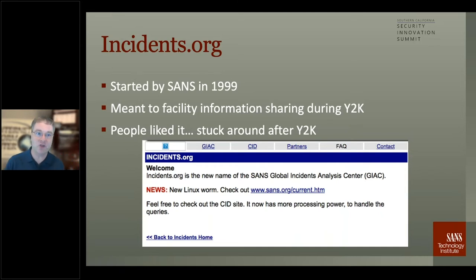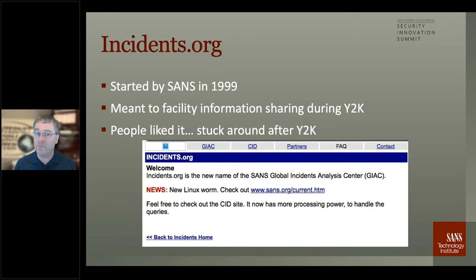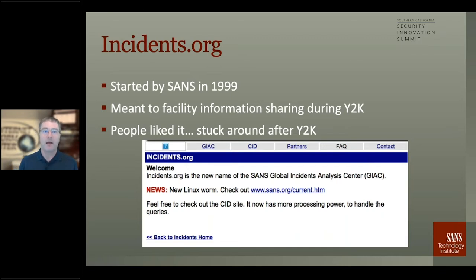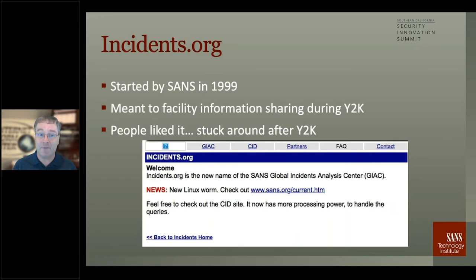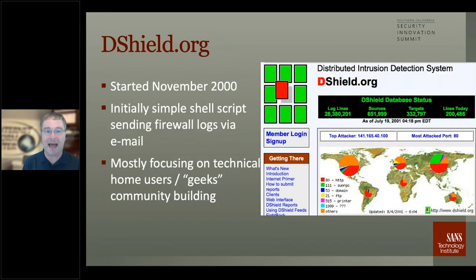Everybody was afraid that as part of Y2K, attackers would take advantage of vulnerabilities that came up during the transition to year 2000. SANS thought, hey, we can probably help with that — let's set up a website where people can share what they're seeing in the network. It was a very simple website, but people loved it. Shortly after Y2K, SANS briefly shut incidents.org down, but people called up and said it was really useful, so SANS brought it back.